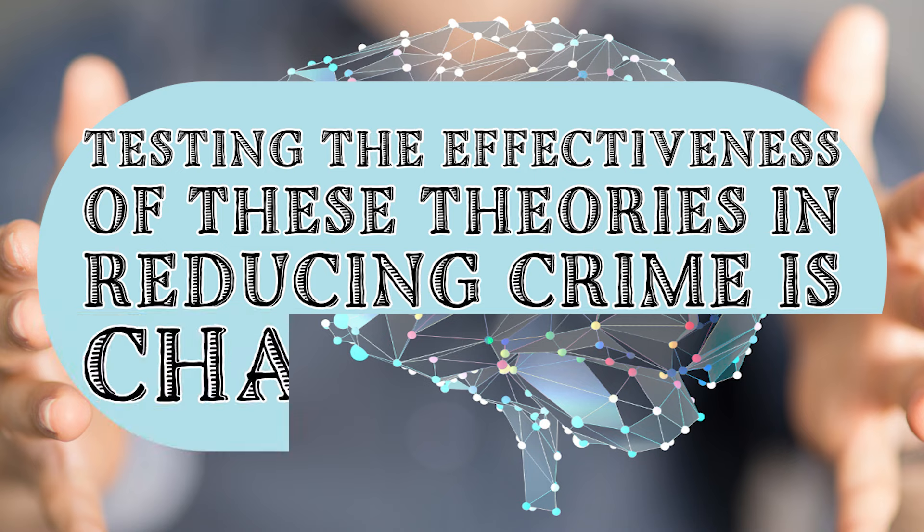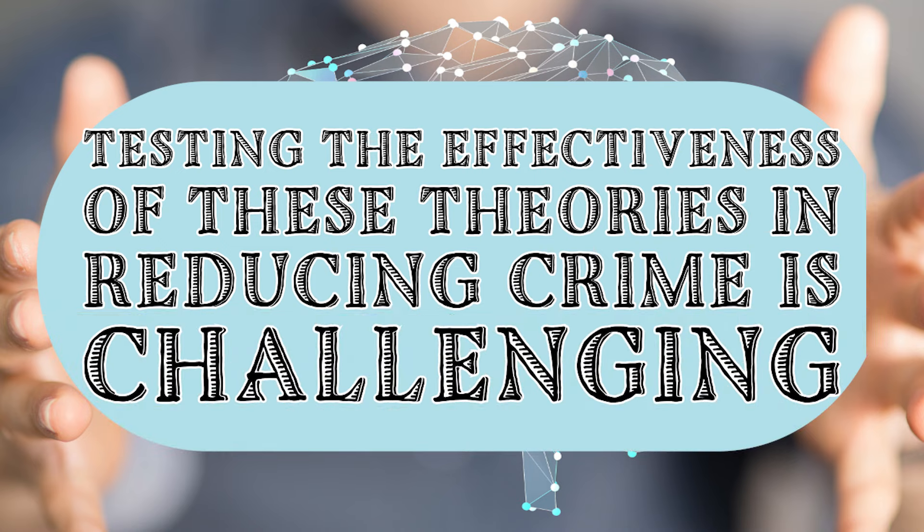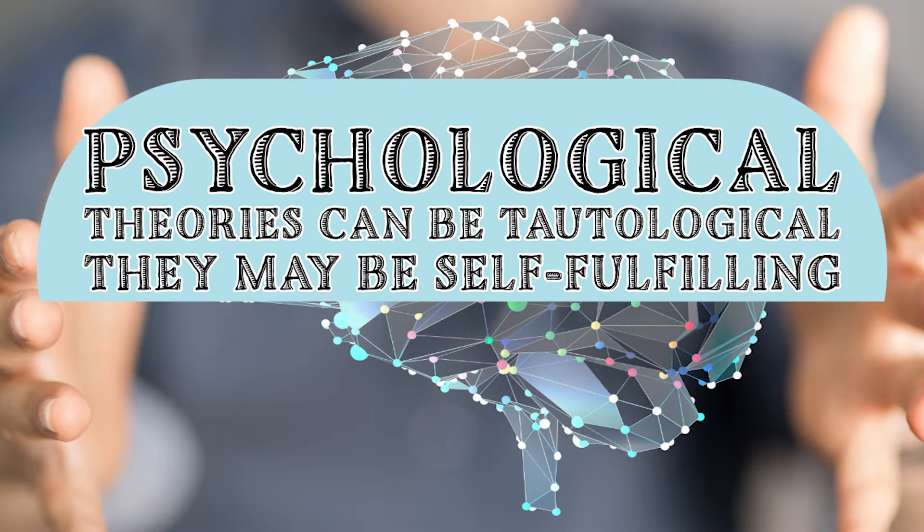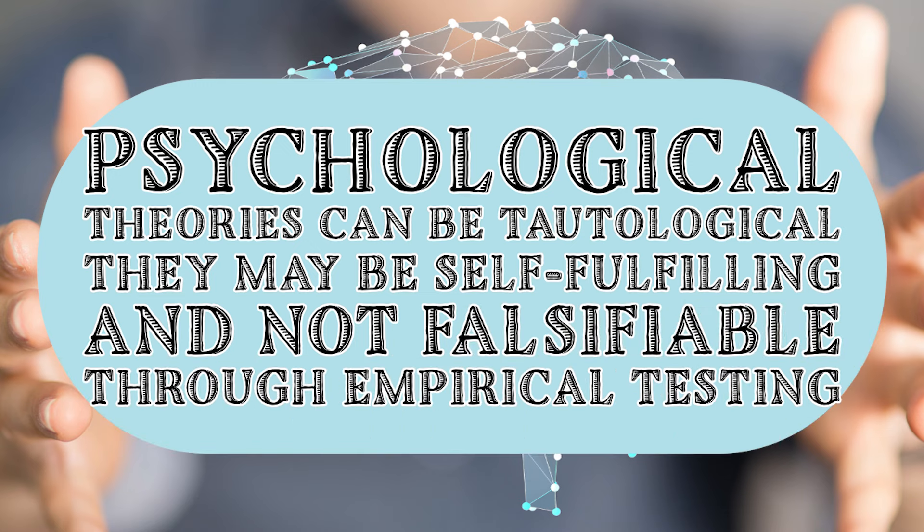However, despite their theoretical appeal, testing the effectiveness of these theories in reducing crime is challenging due to their abstract nature. The abstract nature of Freud's id, ego, and superego, and the subjective measures of personality traits like those identified in the psychopathy checklist, make them nearly impossible to observe, identify, or measure. This lack of tangibility makes testing psychological theories extremely difficult. Additionally, these theories can be tautological, meaning they may be self-fulfilling and not falsifiable through empirical testing. The circular nature of some personality theory predictions — where the trait being tested is both the cause and the effect of the behavior — undermines their testability, posing significant obstacles to empirical scrutiny and application.